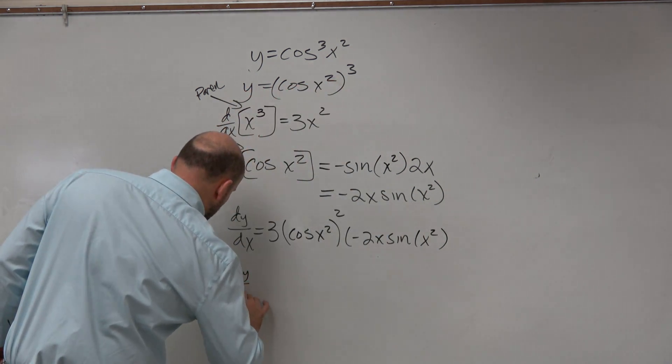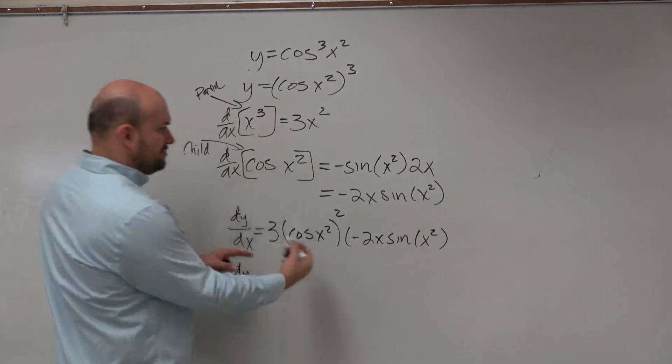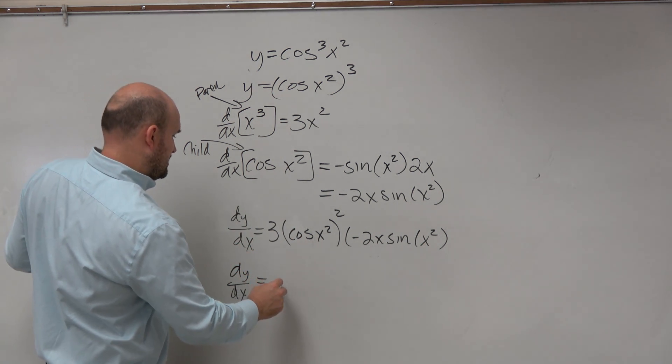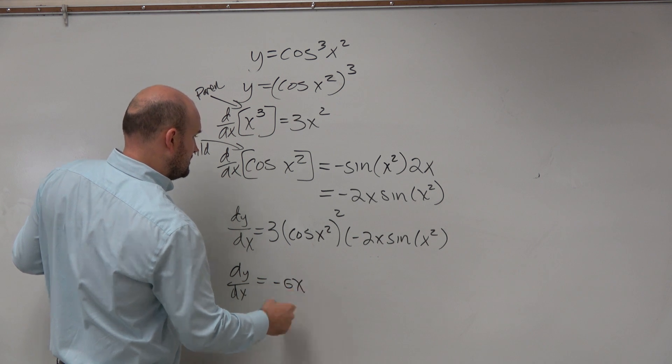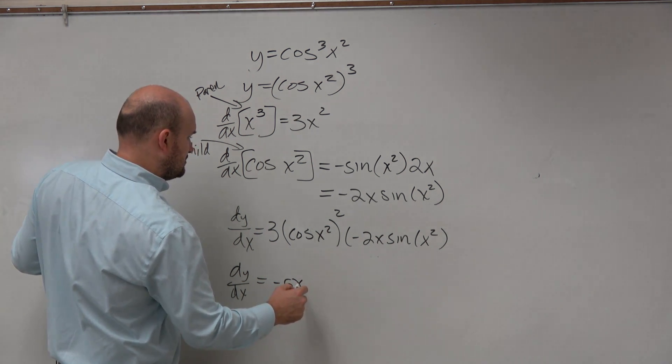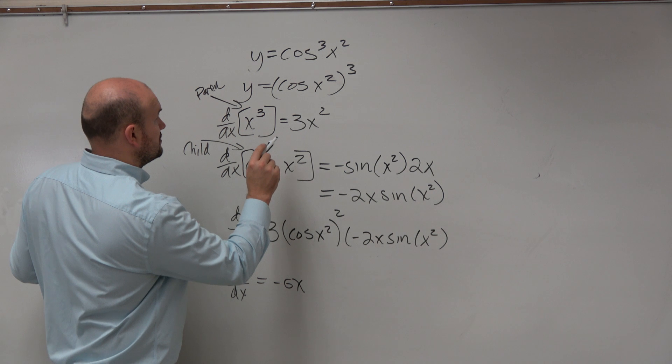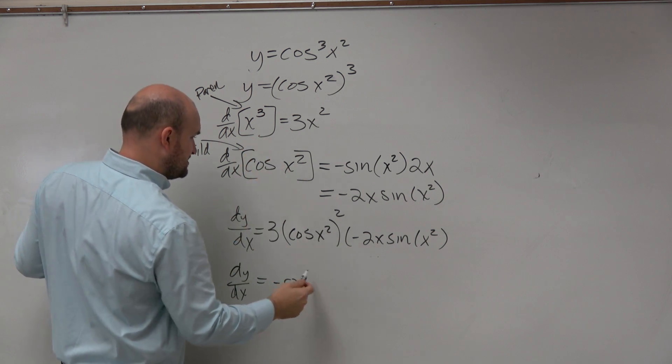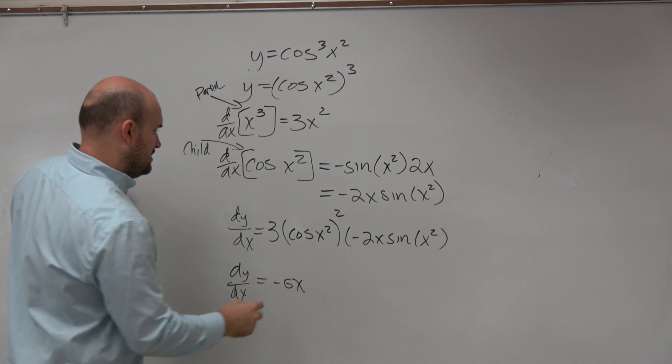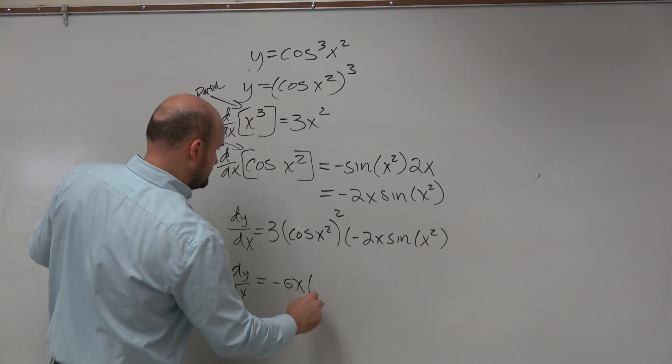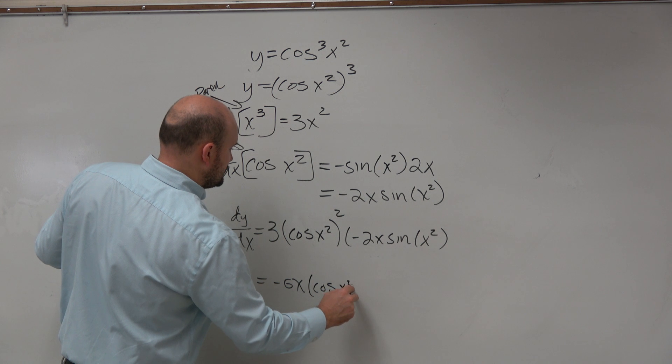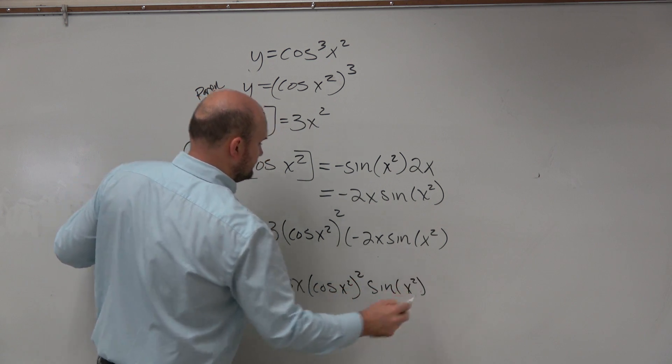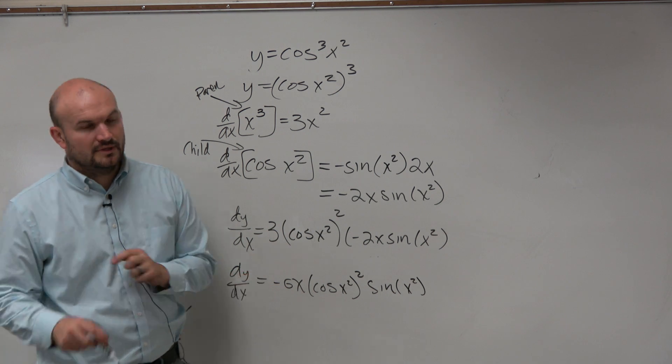Now, dy over dx. Let's put the numbers out in front. So therefore, we would have a negative 6x times cosine of x squared squared times sine of x squared. And then we want to write it.